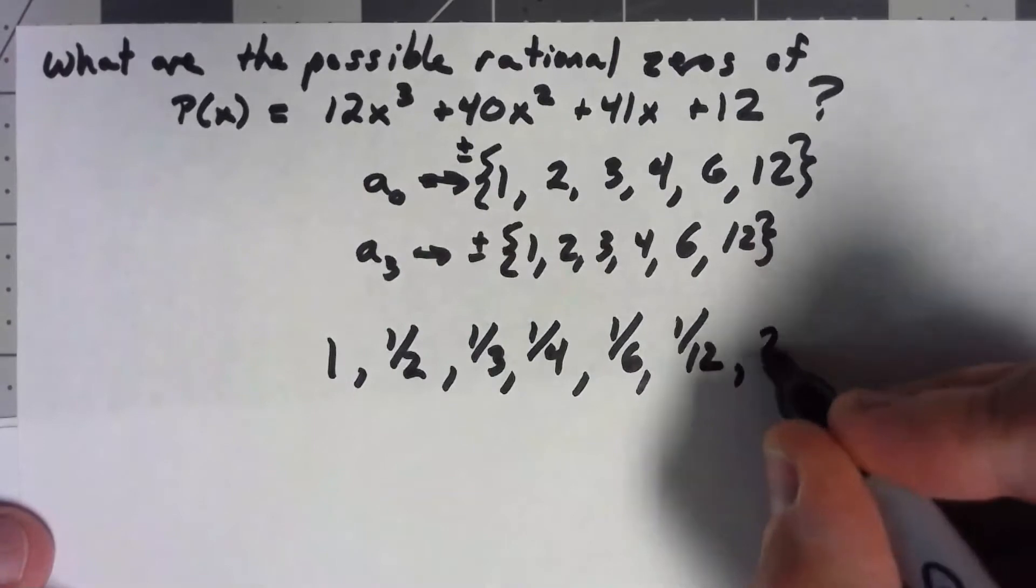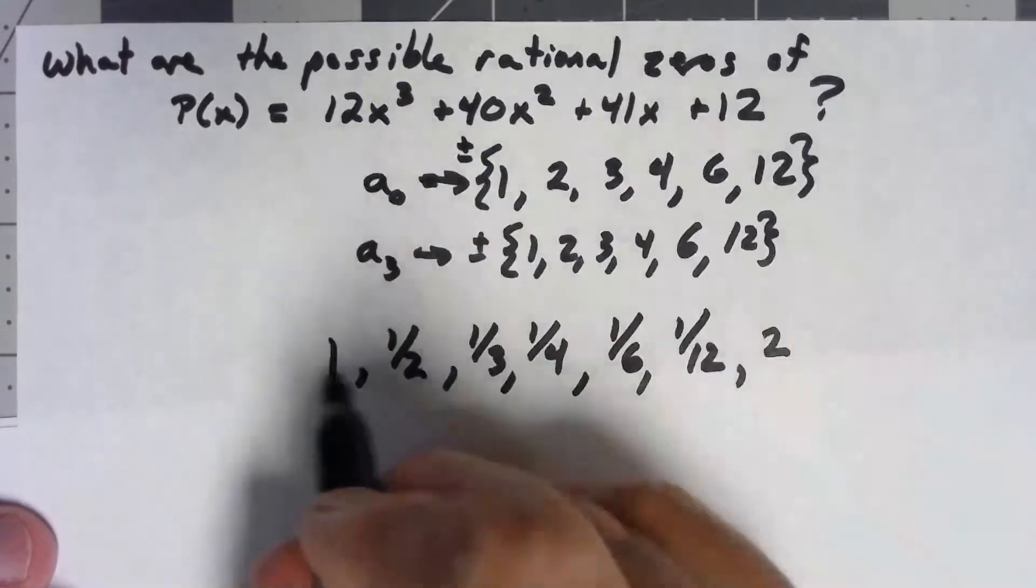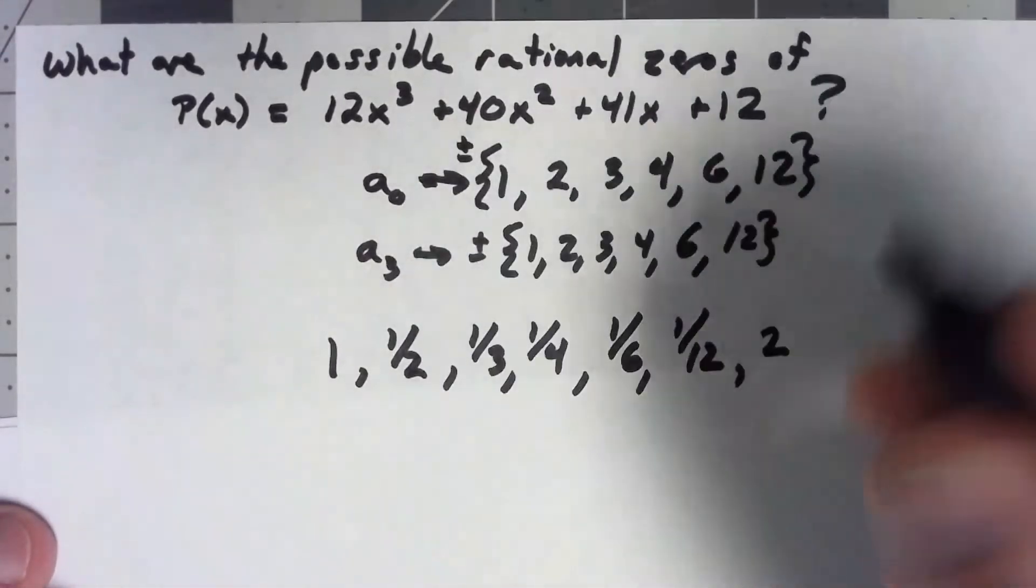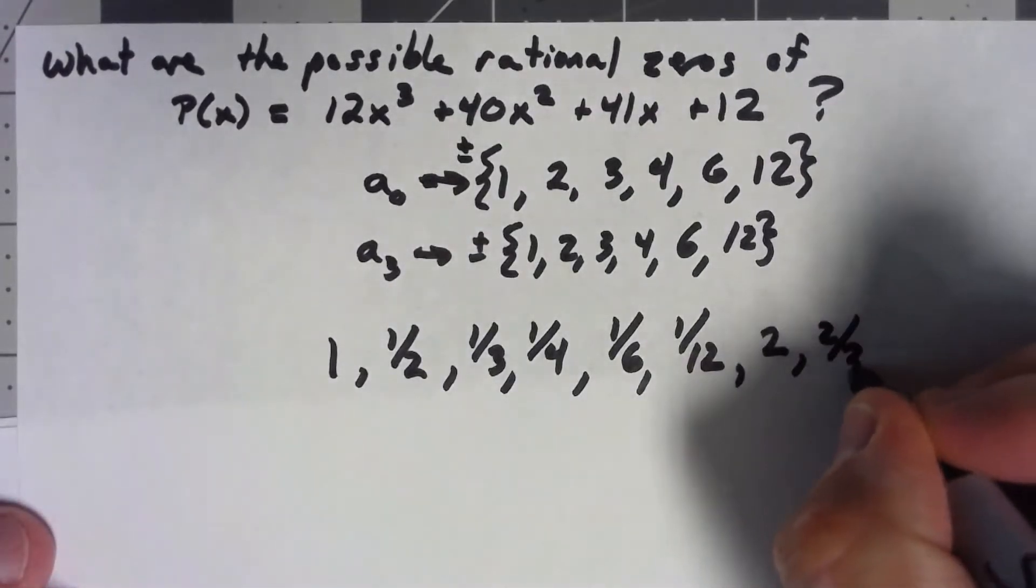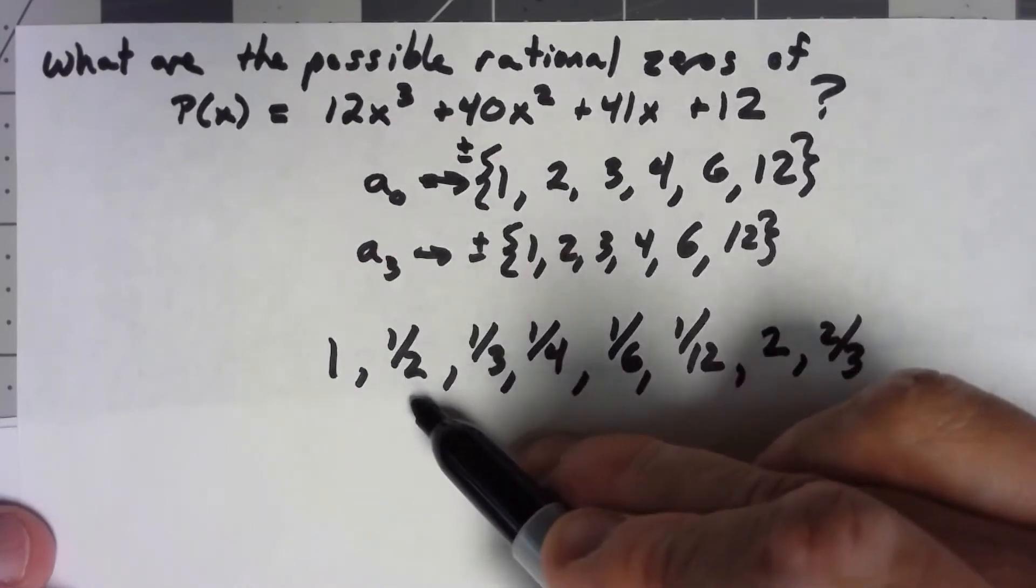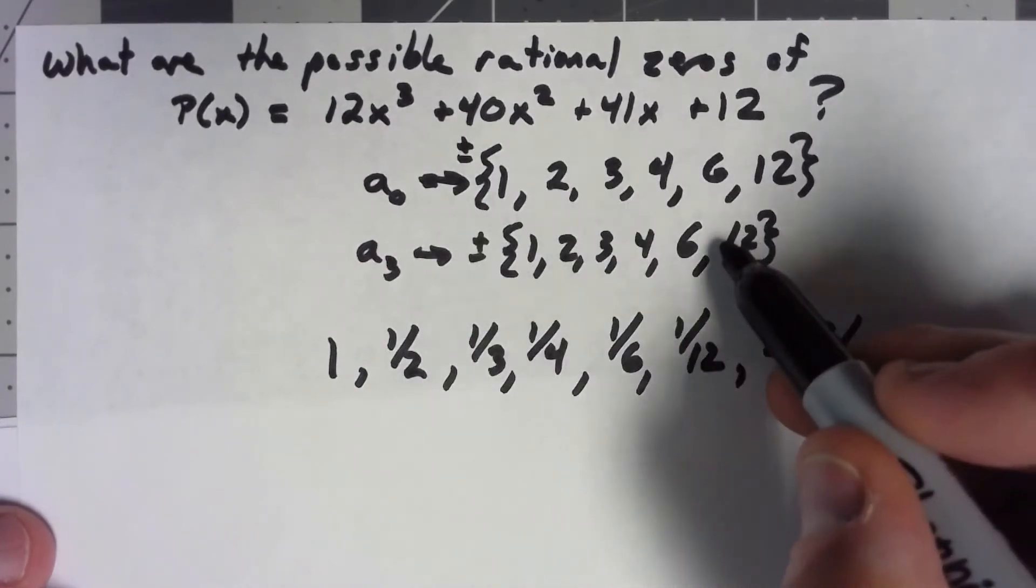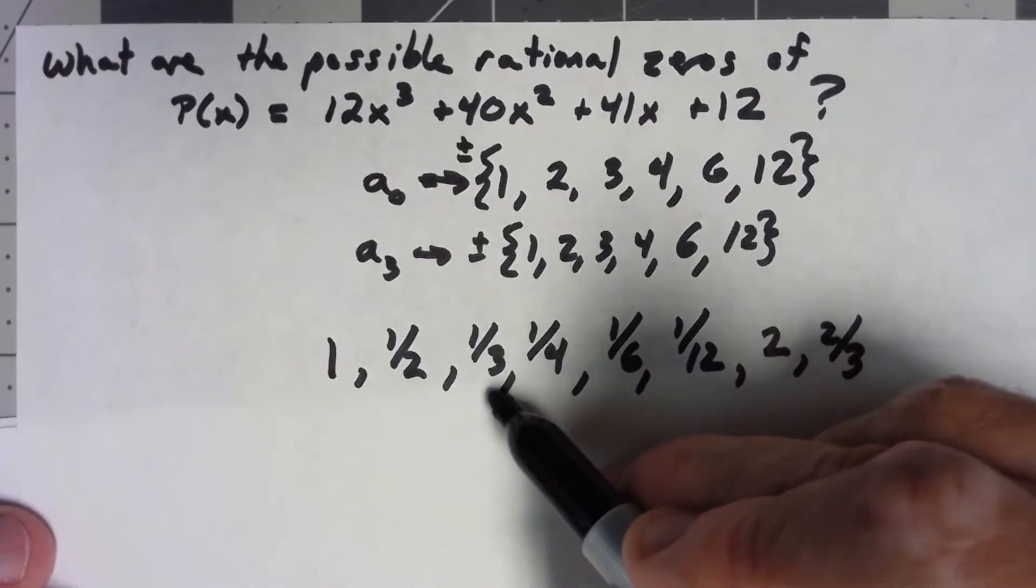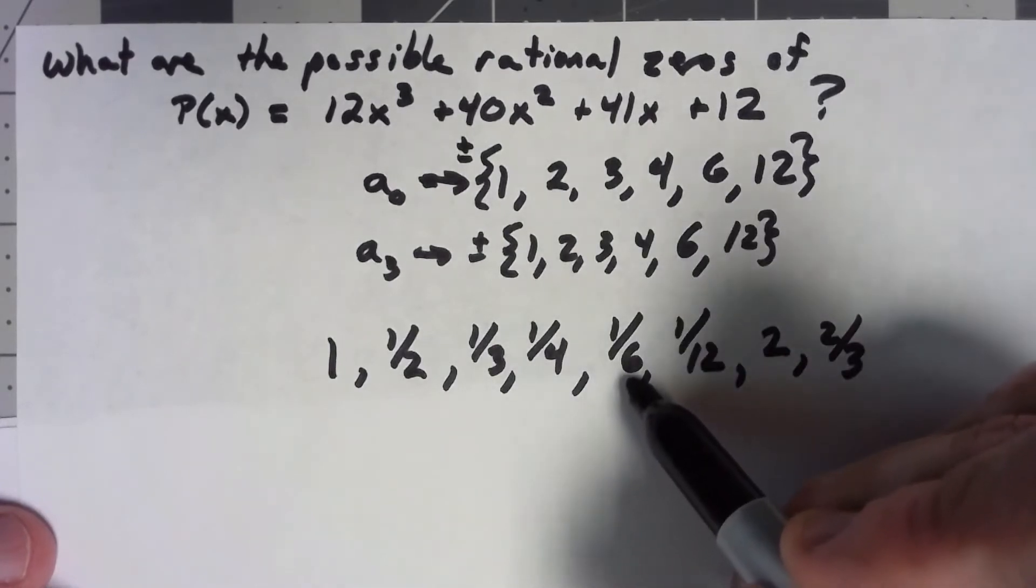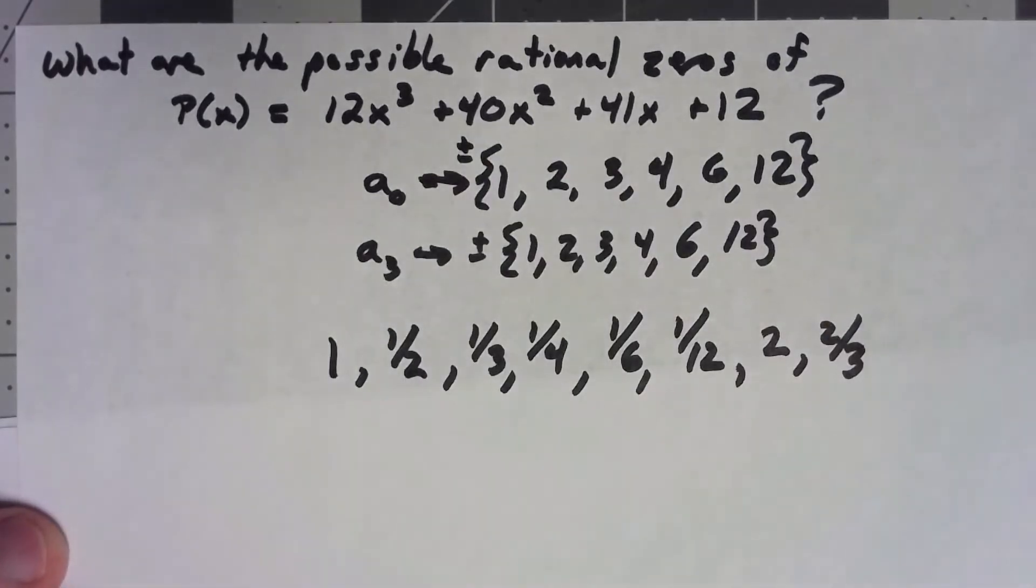Okay, 2 over 1 is a 2. 2 over 2, that's just 1, so I'm not going to put it in there again. 2 over 3 is not in the list. 2 over 4, though, is a half, is already in there. 2 over 6 is a third, which is already in there. And 2 over 12 is a sixth, which is already in there. No need to list those again.